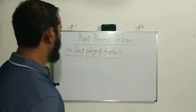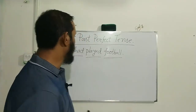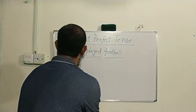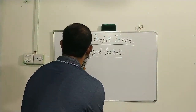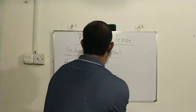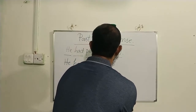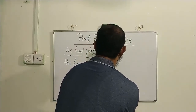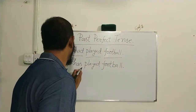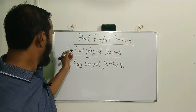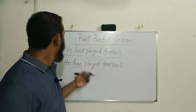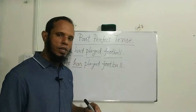So if we take a sentence in Present Perfect Tense, for example: 'He has played football' — here the auxiliary is 'has'. In Present Perfect Tense we use 'have' or 'has', while in Past Perfect Tense we use 'had'.